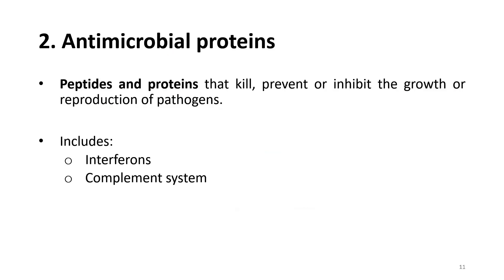Other than phagocytic cells, antimicrobial proteins — which consist of peptides and proteins — are also able to kill, prevent, or inhibit the growth and reproduction of pathogens. Two examples of antimicrobial proteins are interferons and the complement system.